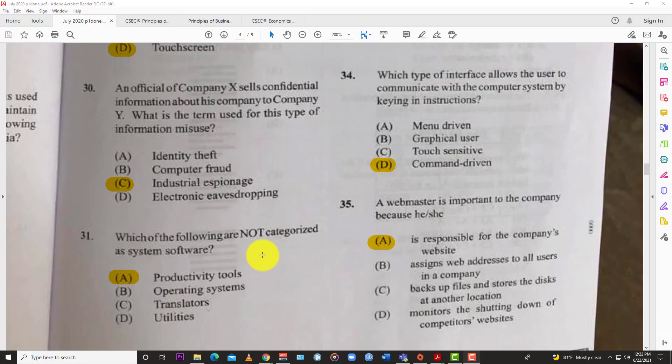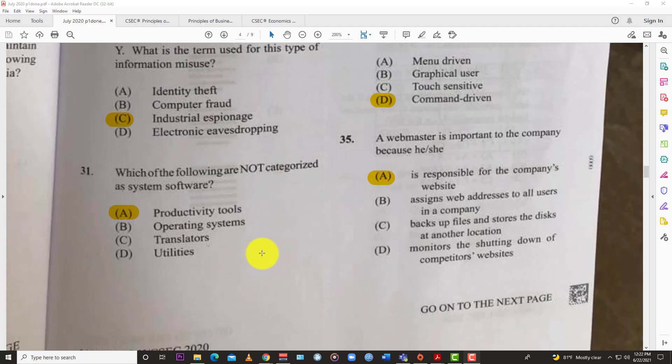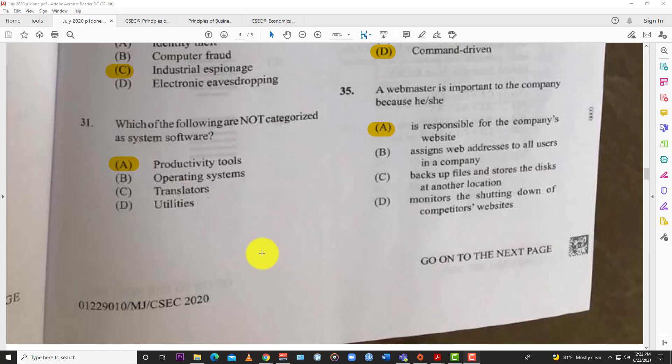Question 31: Which of the following are not categorized as system software? The answer here is of course A, Productivity Tools. Most of the other ones are system-based and they operate on the system level such as the OS, you have translators, or utilities like antiviruses and anti-malware. But productivity software like Adobe Photoshop and Premiere Pro operate on a different level, not within the system itself.